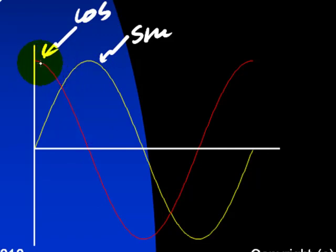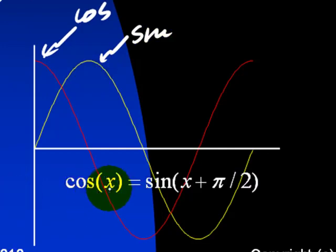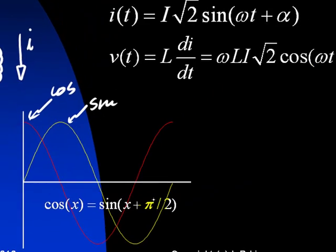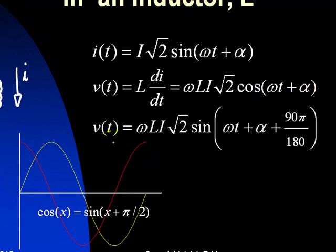but the cosine reaches its peak 90 degrees ahead of time with respect to sine. So we say that in reality cosine of x is just sine of x plus 90 degrees or pi over 2 radians, which is equivalent. Let's utilize this expression. The voltage in the inductor can be written as a sine function of time as omega t plus alpha plus 90 degrees.